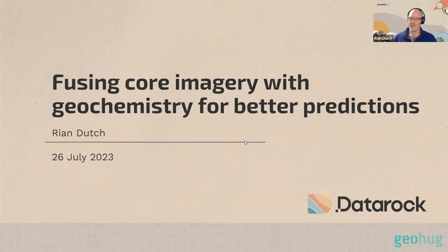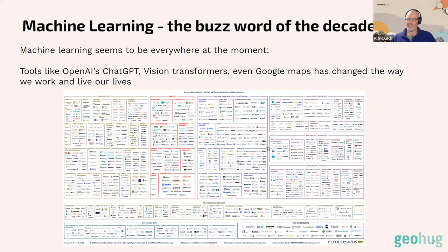We're going to show examples of integrating more traditional geological data sets — the tabular structured data sets like geochemistry — with imagery to lead to better predictions. Machine learning is a bit of a buzzword right now. No matter where you look, everyone's talking about things like ChatGPT, vision transformers, things like Midjourney, and these amazing ways to generate images.